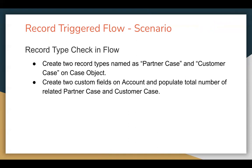The scenario is we need to create two record types named as Partner Case and Customer Case on the Case object. After creation of any case record, we need to count how many partner cases and how many customer cases are related to a particular account. That count we need to populate into two separate custom fields, which will be available on the account record.